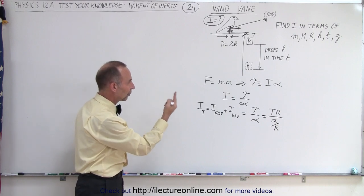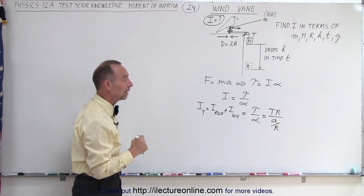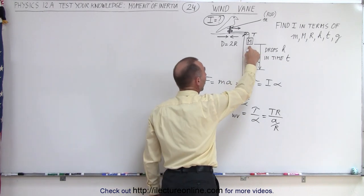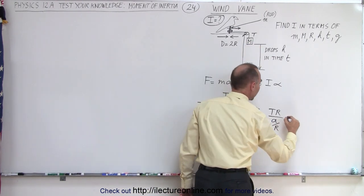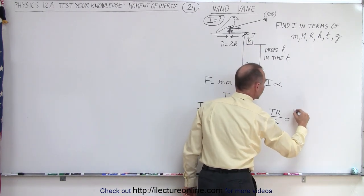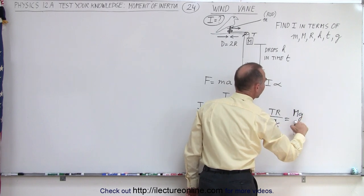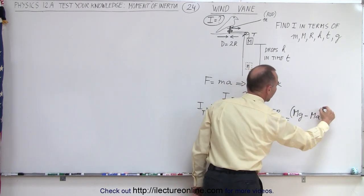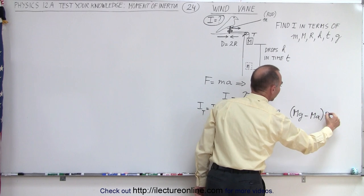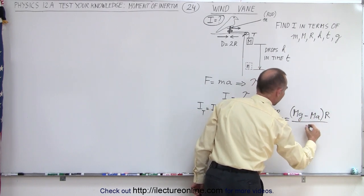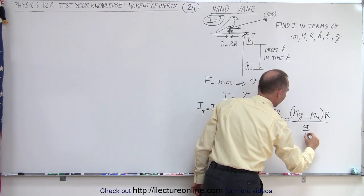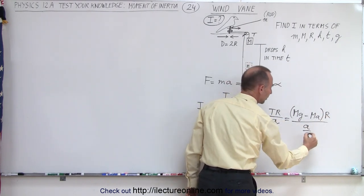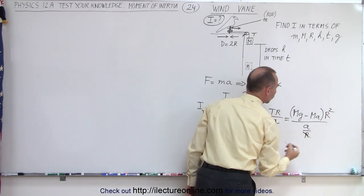That's the angular acceleration of the rotation of the wind vane. The tension in the string caused by the mass accelerating downward is going to be equal to Mg minus Ma, because it's accelerating downward, multiplied by the radius divided by the linear acceleration divided by the radius. When we bring the radius up, this becomes radius squared.